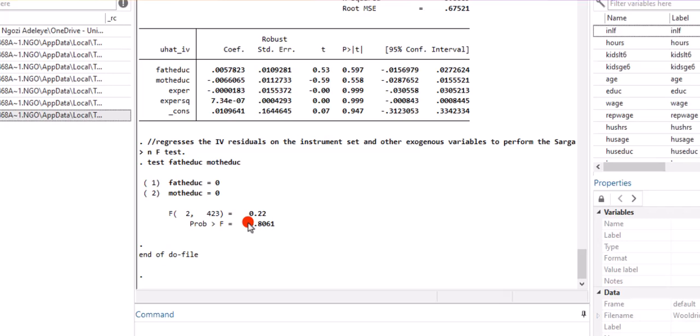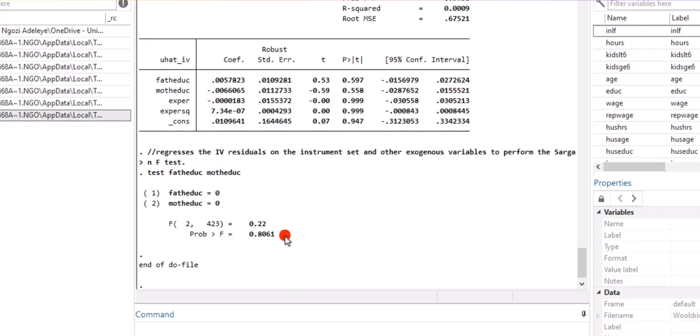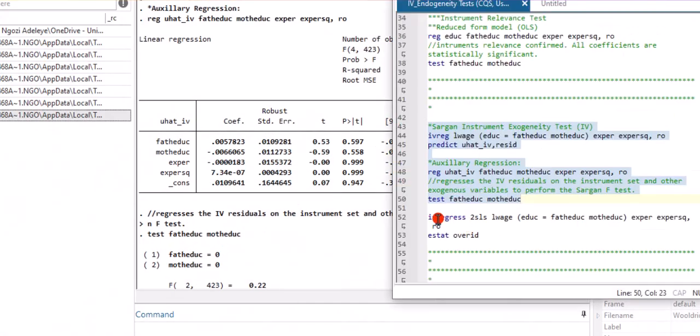This is how you test using these approaches. Another way you can test is when you use status inbuilt over ID or over-identification syntax. This is the code. I'm estimating the IV regress two-state least squares. This is the structural model. And after that, I will just invoke the S-stat over ID. I'm highlighting both now and executing.